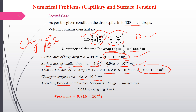The work done equals surface tension multiplied by the change in surface area. So W = σ × ΔA = 0.073 × 4π × 10⁻⁶ = 0.916 × 10⁻⁶ Joules. This is the work required to split the large drop into 125 smaller drops. This is a comprehensive problem on surface tension.